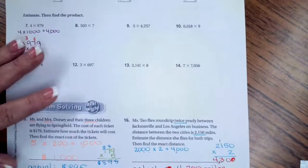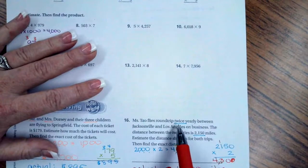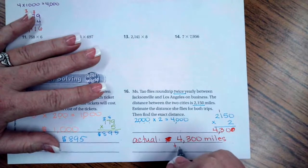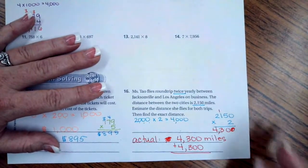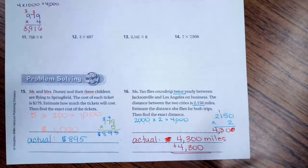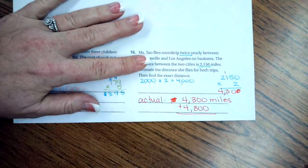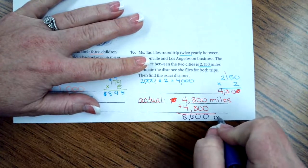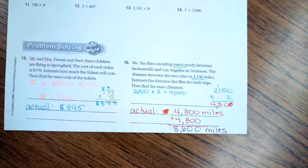You know what, I'm sorry guys, I actually - she makes the trip there and back twice a year, so I'm actually going to add another four thousand three hundred because I did one trip there and back. I didn't do the second trip, so I'm just going to add that extra trip in. So zero, zero, six and eight - eight thousand six hundred miles. Sorry about that.